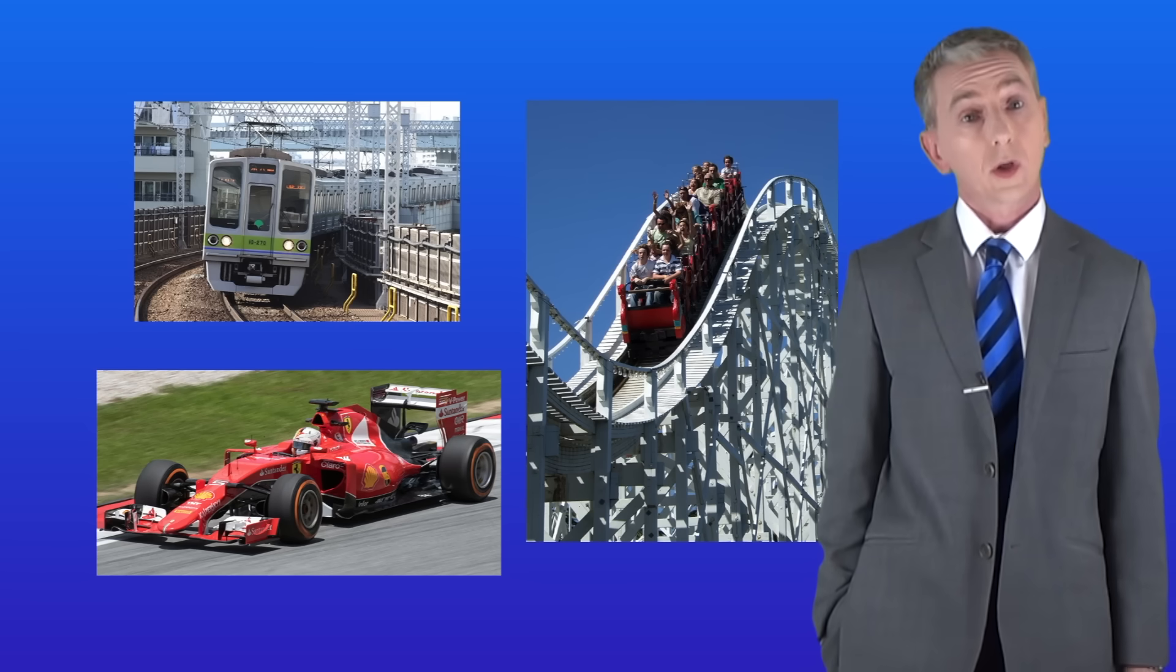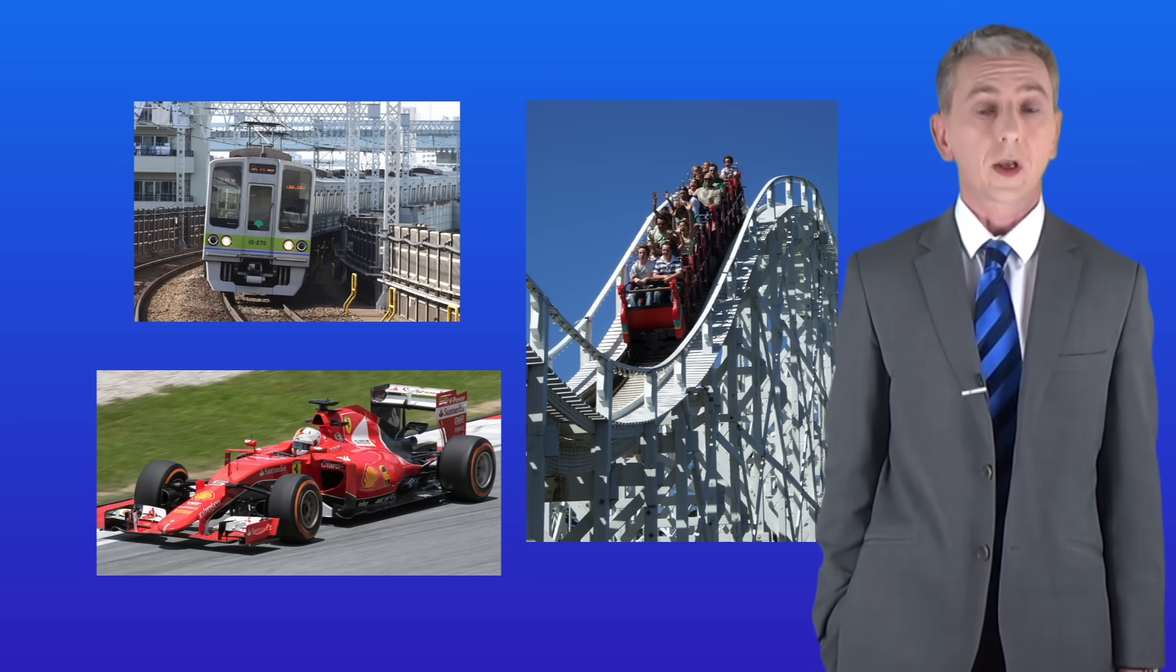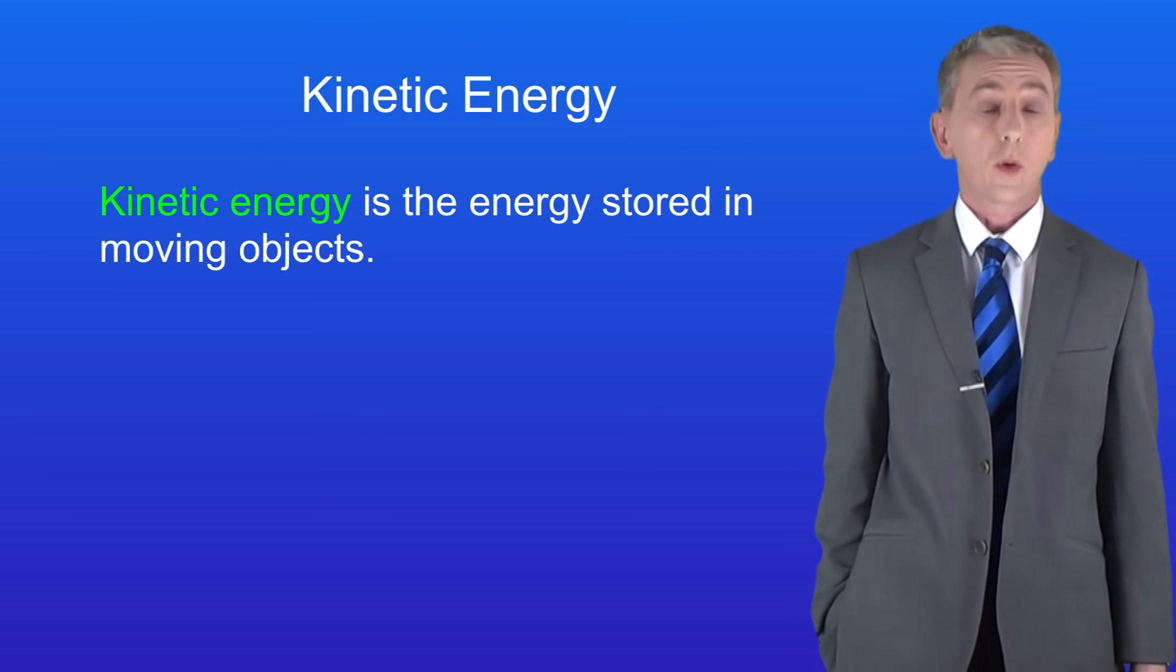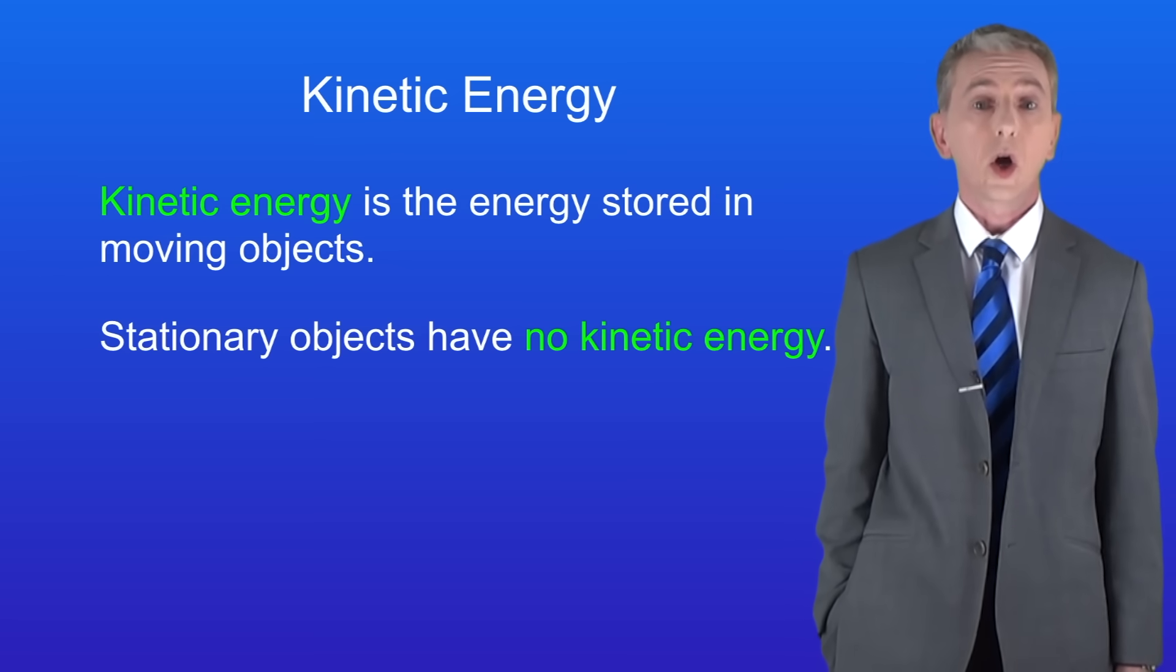All of the objects I'm showing you here have got kinetic energy. We've got a train, a Formula One car and a roller coaster. So what exactly is kinetic energy? Kinetic energy is the energy stored in moving objects, so a stationary object such as a parked car has got no kinetic energy.